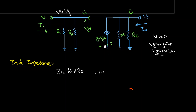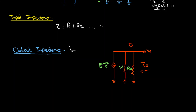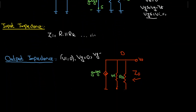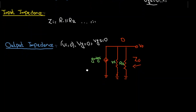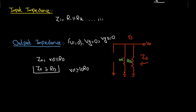To find the output impedance, I redraw the circuit and set vi equal to zero. When vi equals zero, vg equals zero, and therefore vgs equals zero. This means the gm·vgs current source becomes an open circuit. We can then see that the output impedance Zo equals RD parallel to rd. When rd is greater than or equal to ten times RD, Zo approximately equals RD.